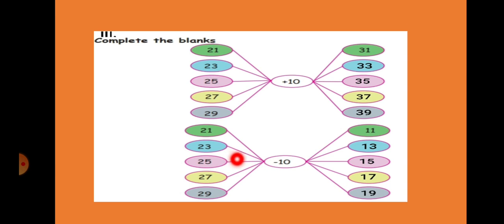And what about minus 10? Minus 10 is nothing but we have to minus this tens number, minus 1, this tens number. 21 minus 10, 11. 23 minus 10, 13. 25 minus 10, 15. 27 minus 10, 17. 29 minus 10, 19. This is the way we can find out easily plus 10 and minus 10.